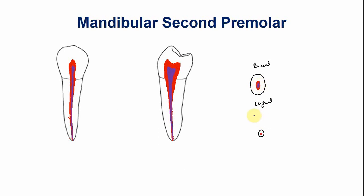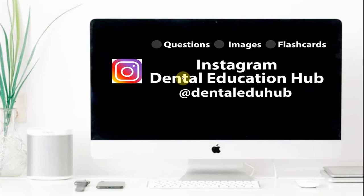In summary, the mandibular second premolars have two pulp horns and a single canal in around 85% of cases. Variations are quite rare in the mandibular second premolars. Thank you very much for watching this lecture. If you have any suggestions or comments, please write in the comments below. Follow our Instagram account Dental ETU Hub for questions and flashcards. Thank you and stay blessed.